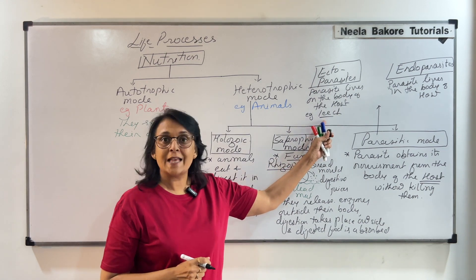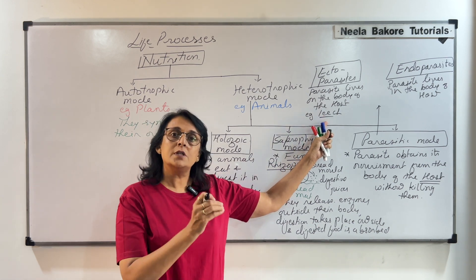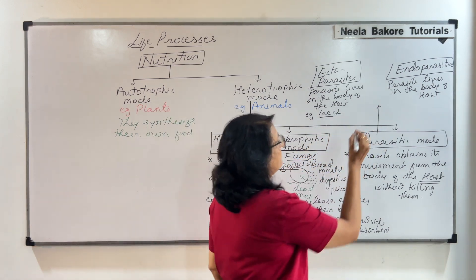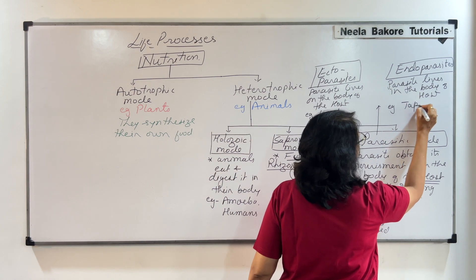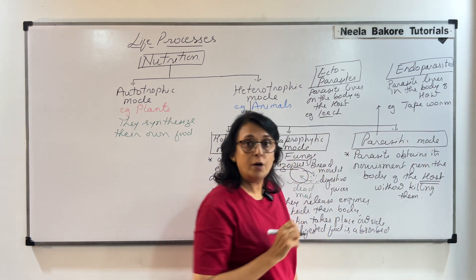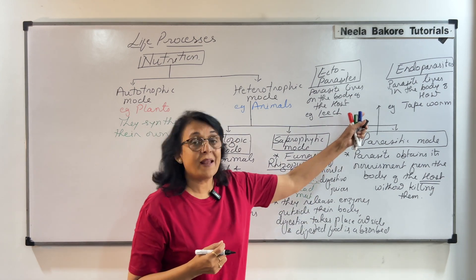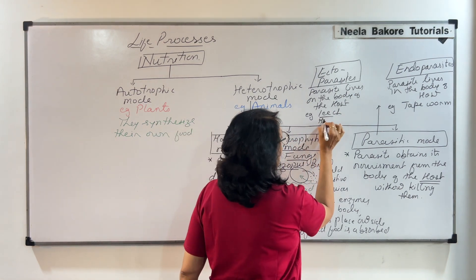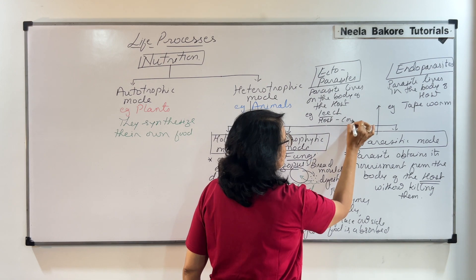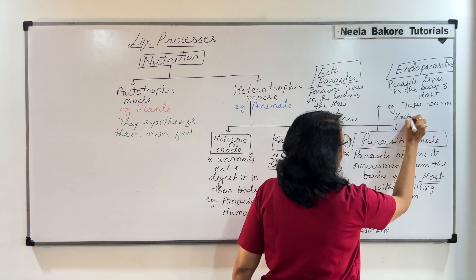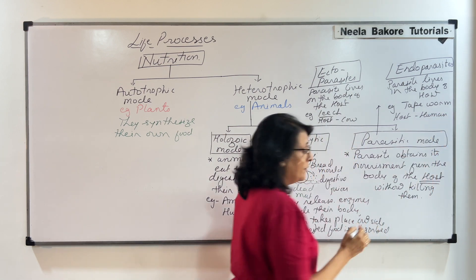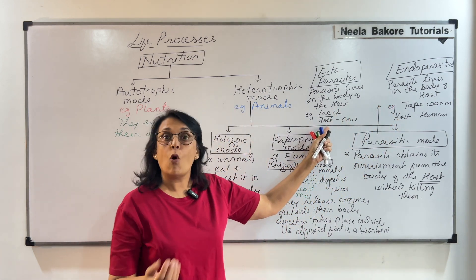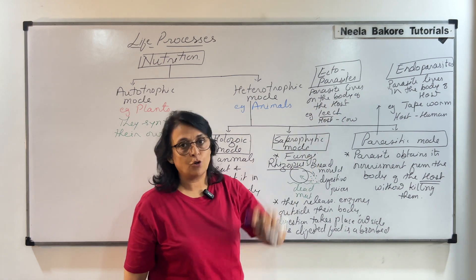An example of an endoparasite is tapeworm, which lives inside the body of a host such as a cow or a human. If the parasite lives inside the body of the host, we call it an endoparasite. If it lives on the body of the host, we call it an ectoparasite.